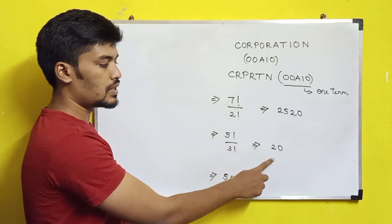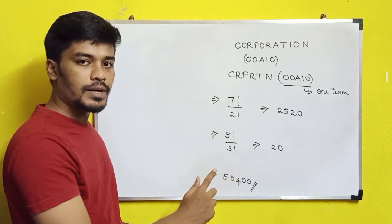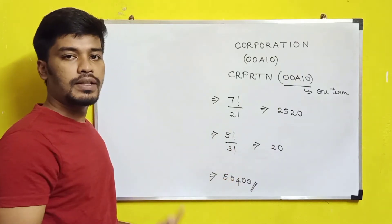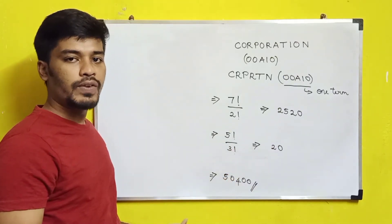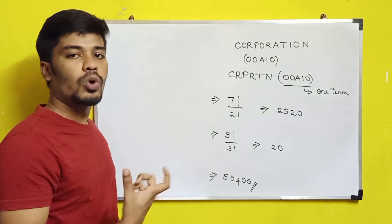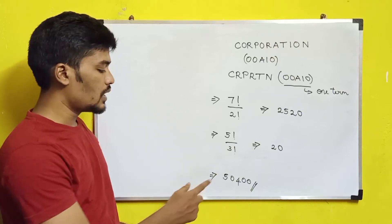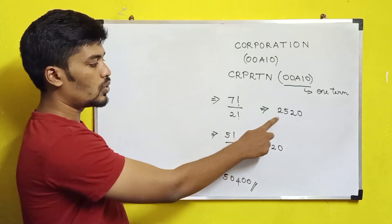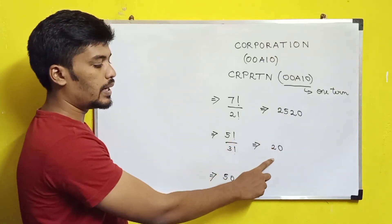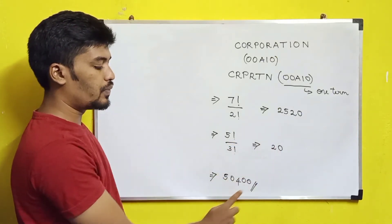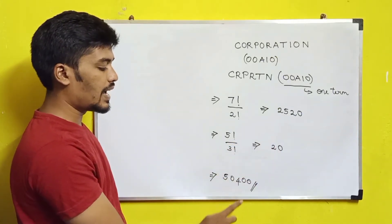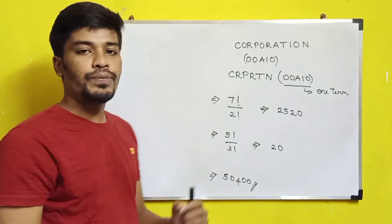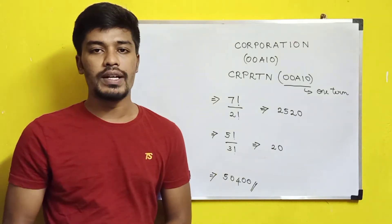Multiplying these two results gives the total number of arrangements: 2520 × 20 = 50,400. That is the answer to the first question.